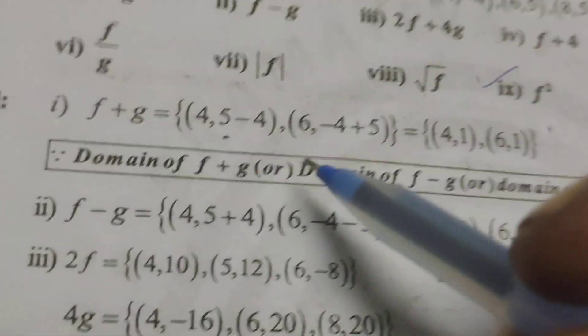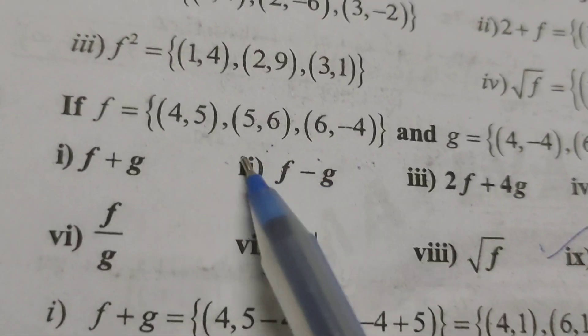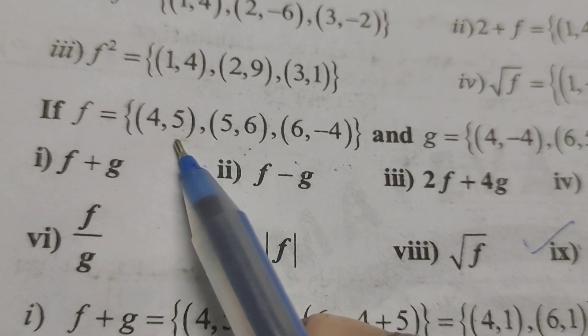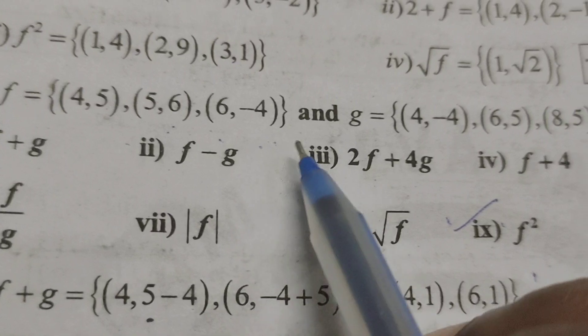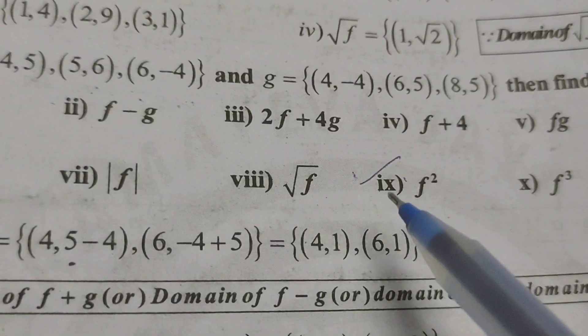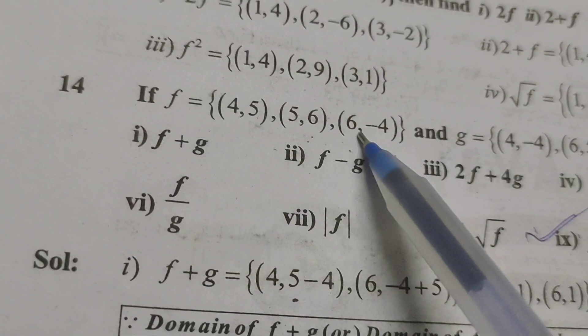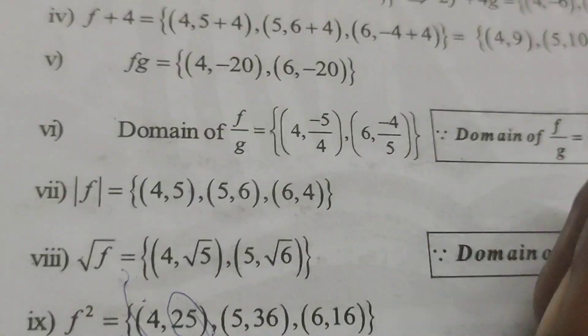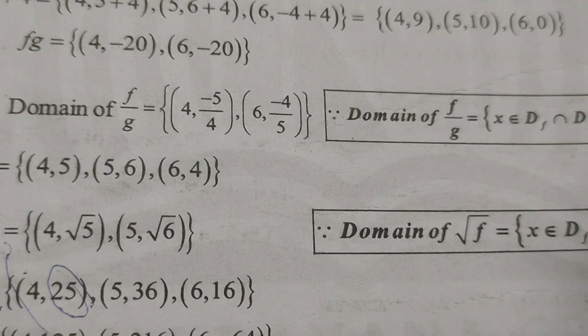Today we're going to explain this problem. If f equals the set of ordered pairs {(4,5), (5,6), (6,-4)}, find f squared. First, to find f squared: